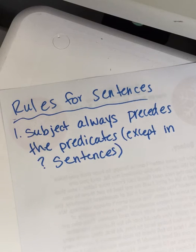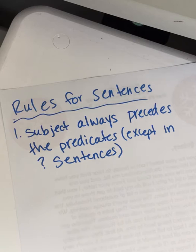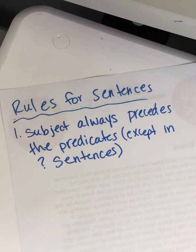The subject always comes first, except if the sentence is a question — then the verb comes first, sometimes. For example: 'Will Jenny win the lottery?' Who is the subject? Jenny. So you need to turn the sentence into a statement: Jenny will win the lottery. And then it puts everything in the right order.